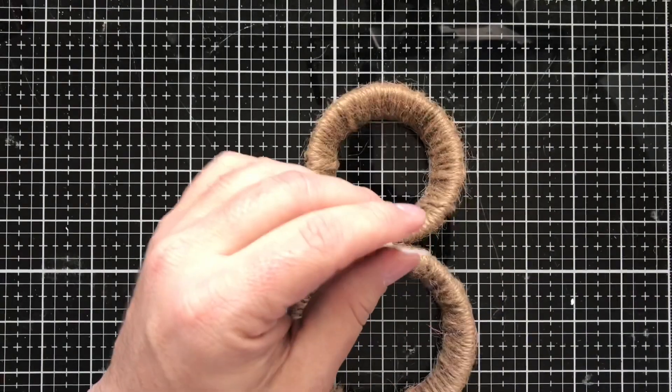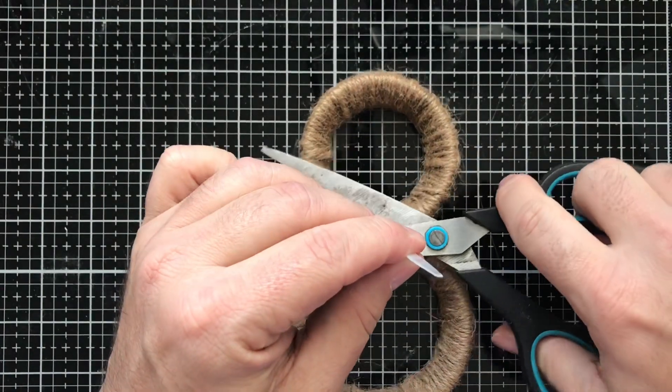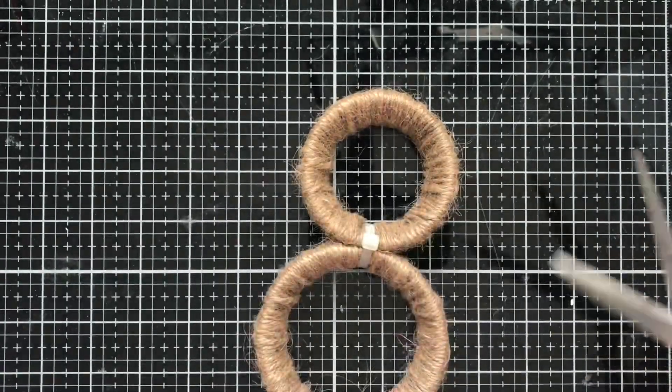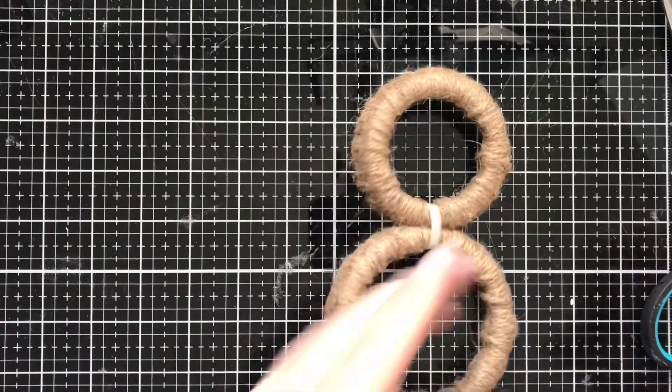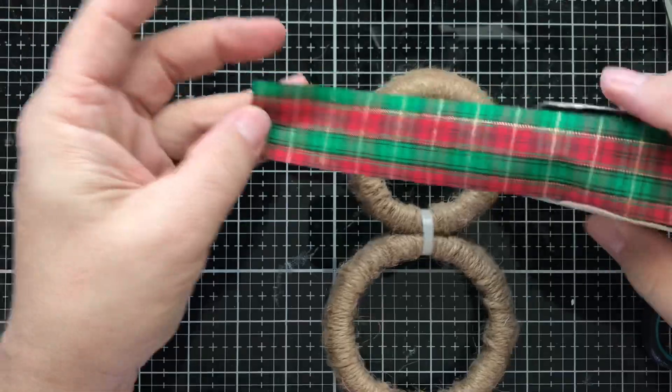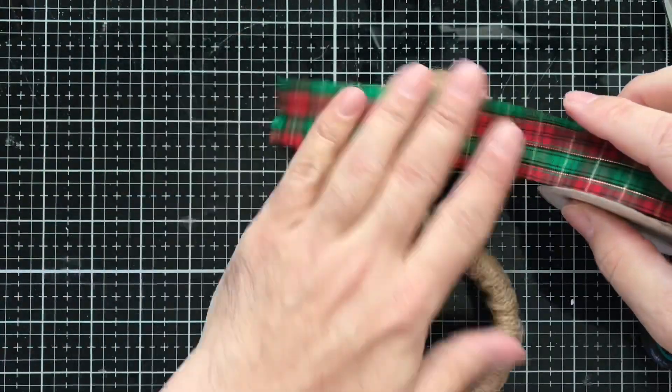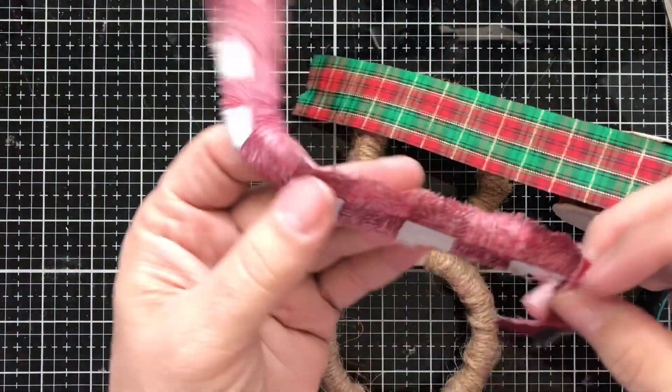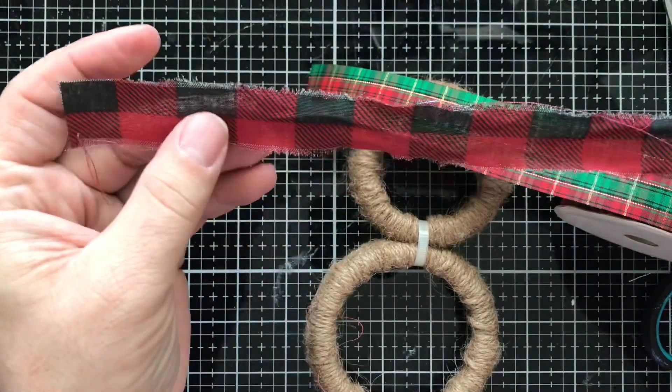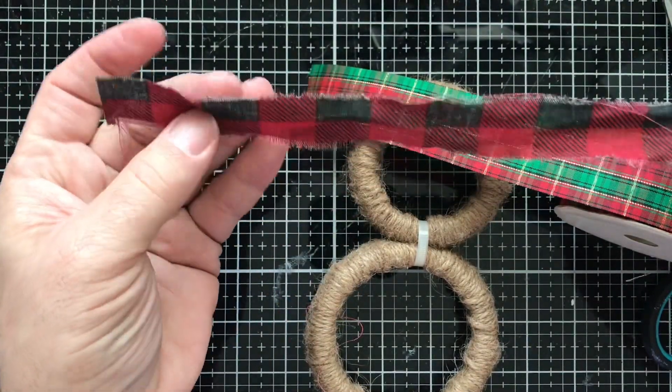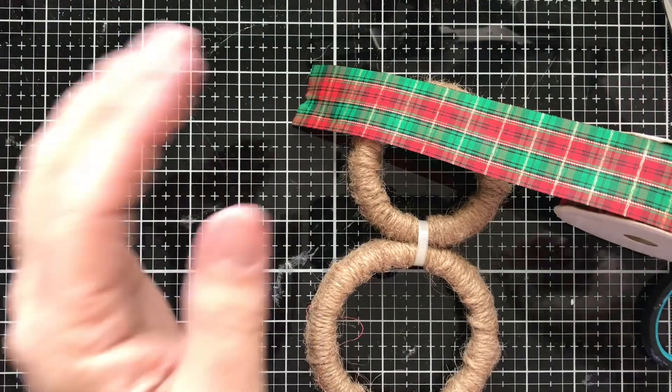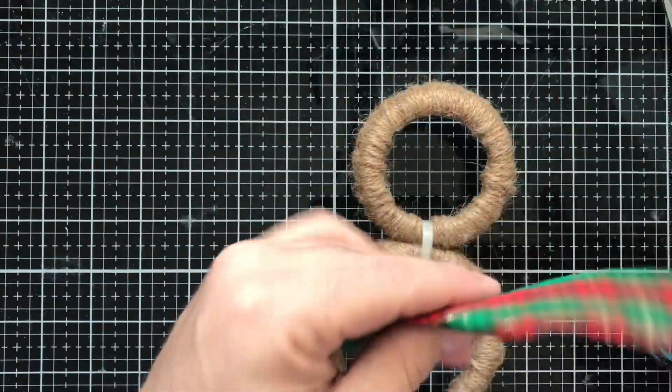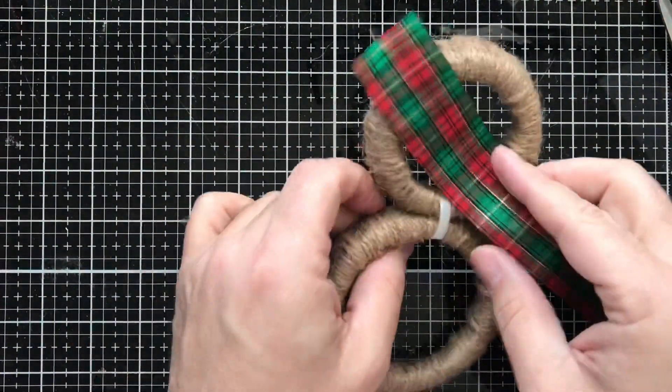And boom! Here I have some plaid ribbon. You can use any kind of ribbon you want. You can even use fabric - I was going to use this but it wasn't wide enough for me, so I decided to use this ribbon. I'm going to put the ribbon on there and see how much I think I may need to finish this.